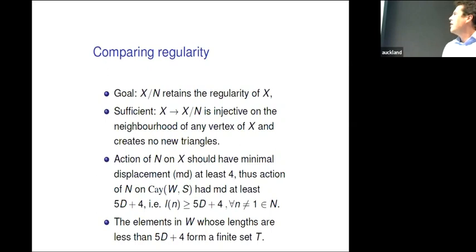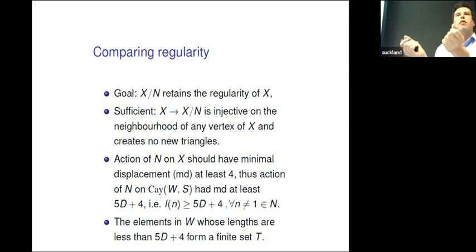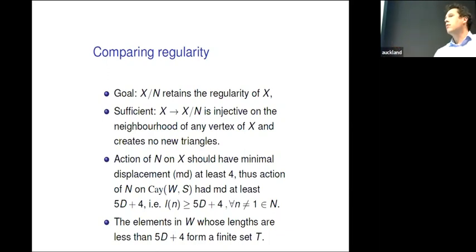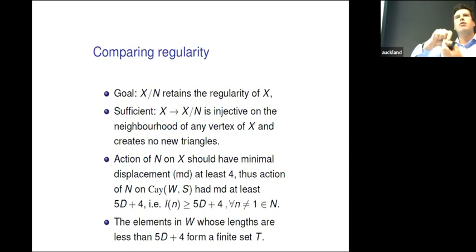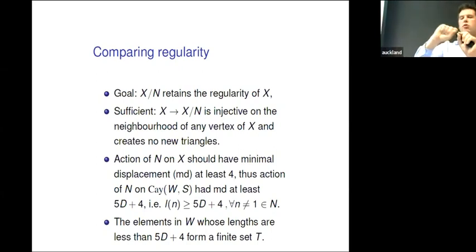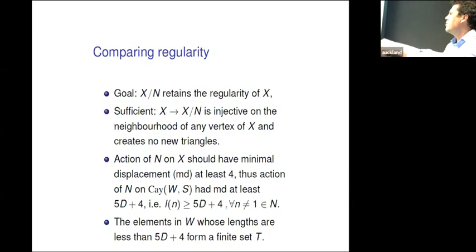It turns out it's sufficient that you're injective on the neighborhood of any vertex. If you never make two vertices collide, you're not going to fiddle with the regularity. If you don't create any new triangles, you're not going to get in trouble with higher-dimensional simplices either. So all you need to check is that the minimal displacement of the action of N on X sends vertices away by distance at least four. If you send it away by distance three, two vertices could collapse and you get a triangle — but if the displacement is always at least four, you will not get any new triangles, which guarantees you keep your regularity.